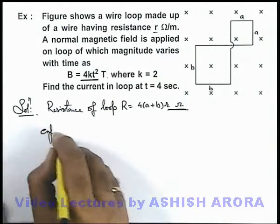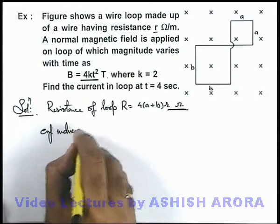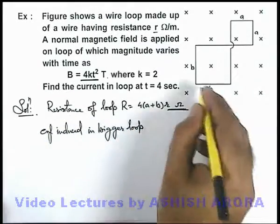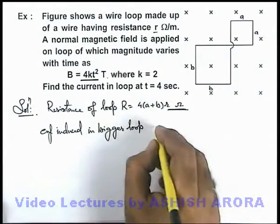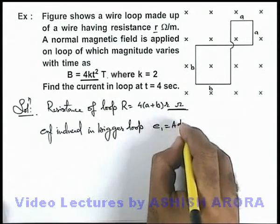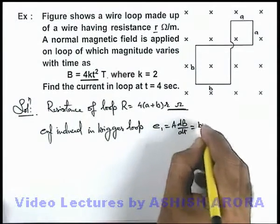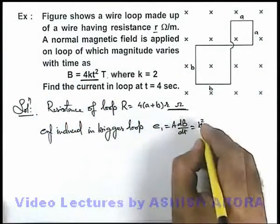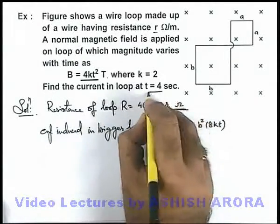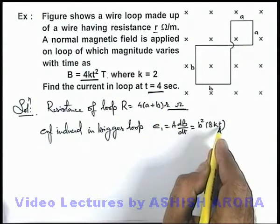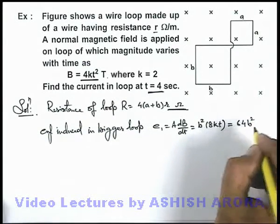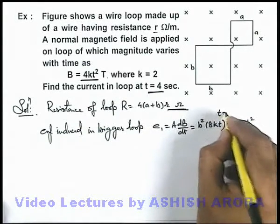So if we calculate EMF induced in the bigger loop, which is of side b, the EMF induced can be written as e₁ which is area multiplied by dB/dt. So here the area of this loop is b², and dB/dt is 8kt. We are required to find the current at t equal to 4 seconds. If we substitute t = 4 and k = 2, then this will be 64b². That is at time t equal to 4 seconds.